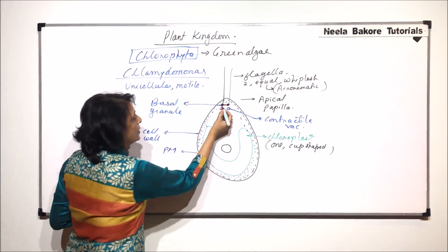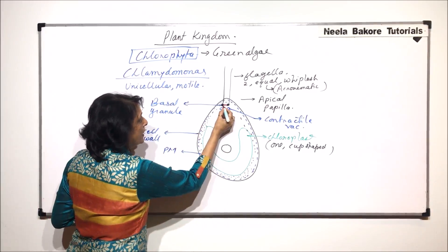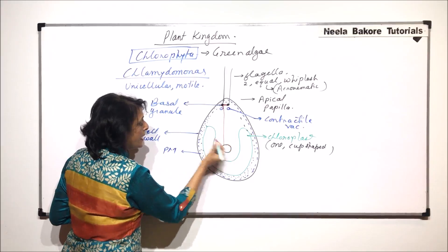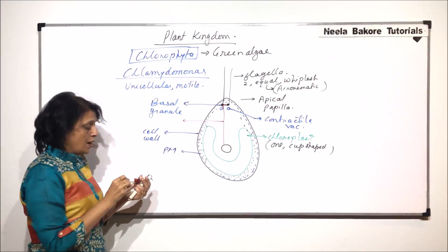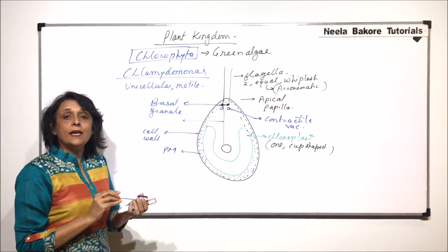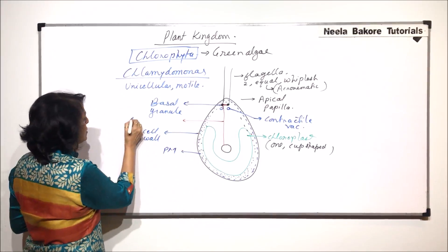The two basal granules are connected with each other, and one basal granule is connected with the nucleus. This thread-like structure which connects the basal granule to the nucleus is known as rhizoplast.